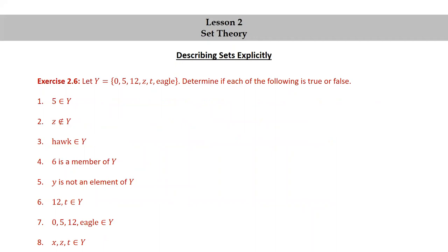Let's try one more exercise. Let Y equal the set of 0, 5, 12, Z, T, eagle. Determine if each of the following is true or false. Go ahead and pause the video again. Do the exercise and then resume the video to check your answers with mine.